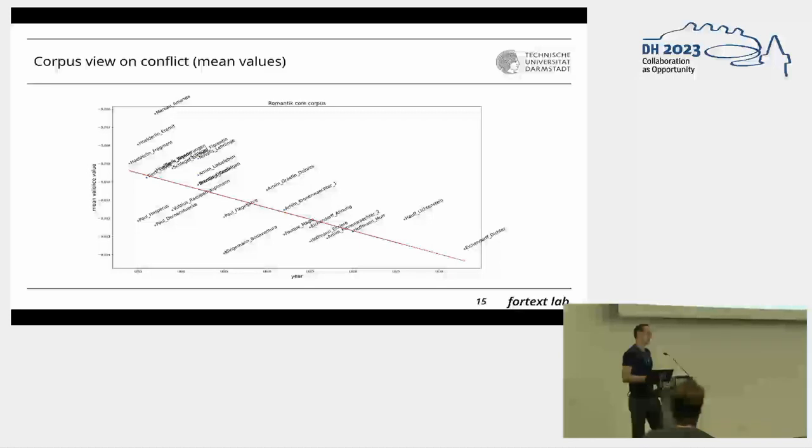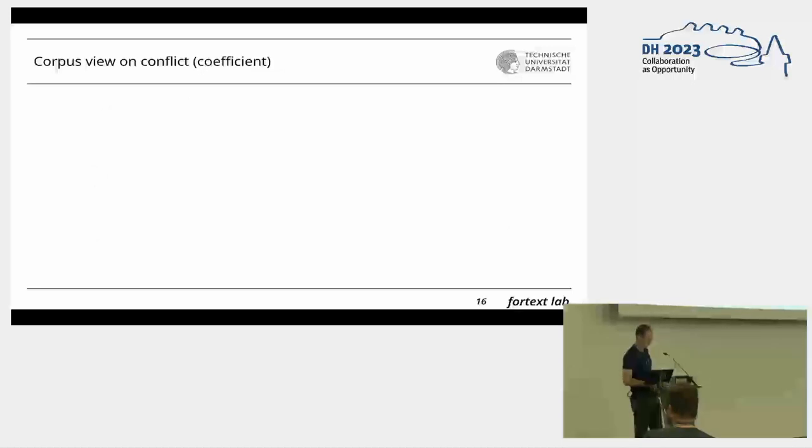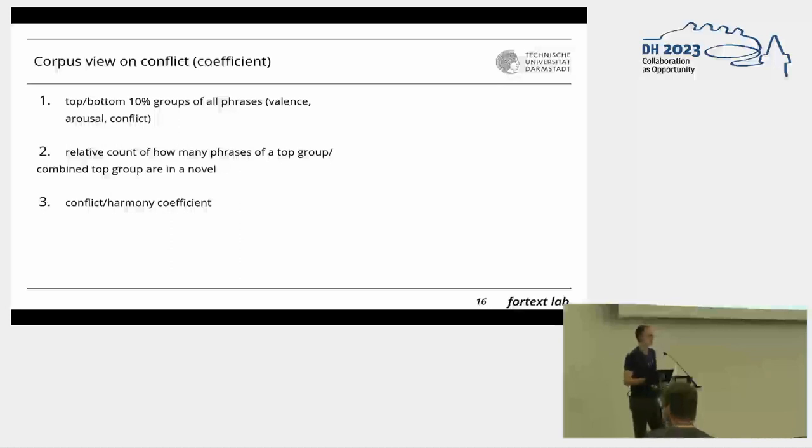We also developed an alternative approach for looking at the entire corpus by examining extremes. We took the top and bottom 10% groups of verb phrases from all novels in the sub-corpus, sorted by each value. Besides that, we wanted to get intersecting groups for the sentiment values. If you remember this emotion model, we wanted to look at diagonal intersections. We took the top 10%, for example, of the arousal and valence groups and looked at how they intersected—which verb phrases were in both groups.